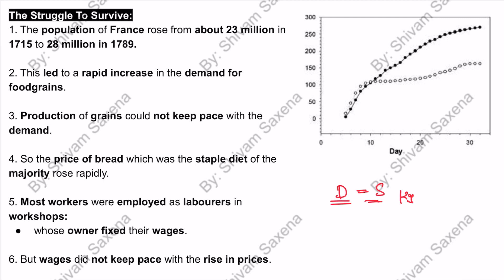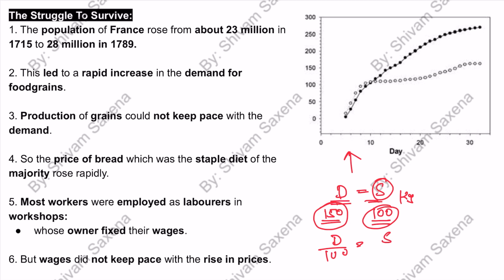As population increased, the demand for food grains also increased. For example, if demand went from 100 to 150 but supply remained at 100, more people are demanding but supply is less — so prices increase. Conversely, if demand is 100 but supply becomes 150, goods are in excess and prices decrease. This is the economic concept we apply to our topic.